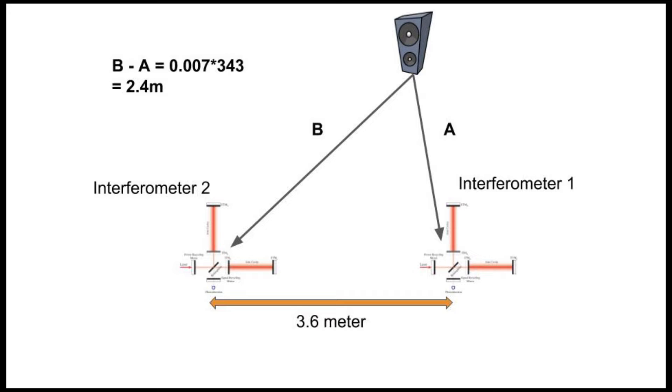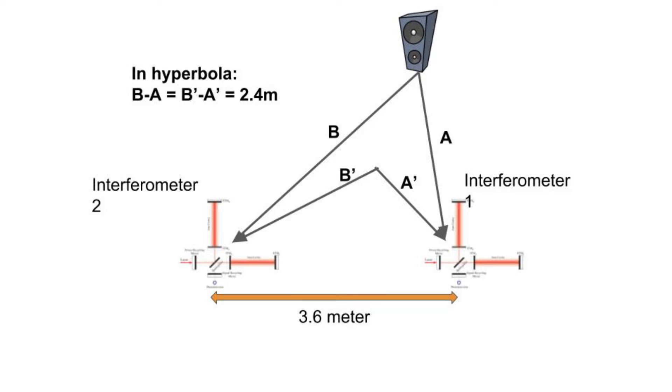Can we conclude the location of the source, in this case, the speaker? No, because all we have is the path difference B minus A, which is 2.4 meters.